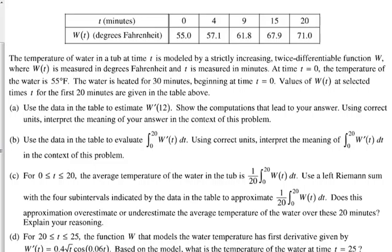Part B, we need to use the data in the table to evaluate the integral from 0 to 20 of W'(t). Well, what is the integral of a derivative? It's the original function. So this would be W(20) minus W(0), which in this case would be 71 minus 55, which is 16 degrees.